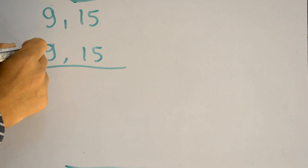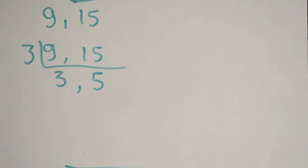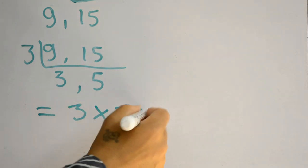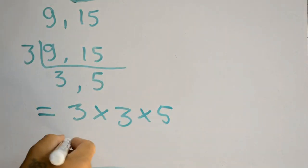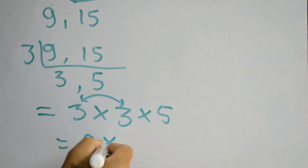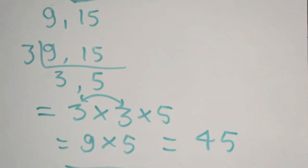So we write 3 here. 3 is divisible by both 9 and 15 — 3 times 3 are 9, and 3 times 5 are 15. We now have all prime numbers, so the LCM of 9 and 15 is 3 times 3 times 5. Multiplying: 3 times 3 is 9, and 9 times 5 is 45.